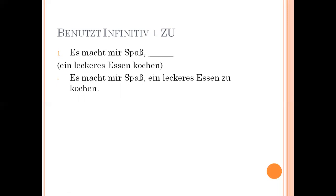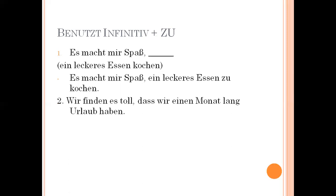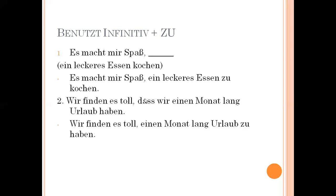Second example: 'Wir finden es toll, dass wir einen Monat lang Urlaub haben' — we find it excellent that we have one month's vacation. The subject 'wir' is the same in both sentences, so in English it becomes: 'We find it excellent to have one month's vacation.' We remove 'dass' and 'wir haben,' so the answer is: 'Wir finden es toll, einen Monat lang Urlaub zu haben.' Third example — question and answer: 'Hast du Zeit, kommst du ins Kino?' Answer: 'Nein, ich habe keine Zeit ins Kino zu kommen' — No, I have no time to come to the theatre.